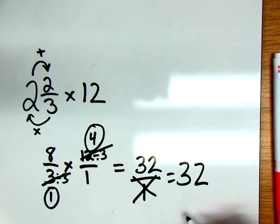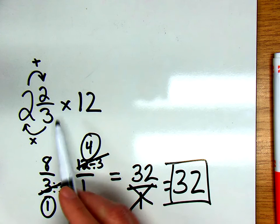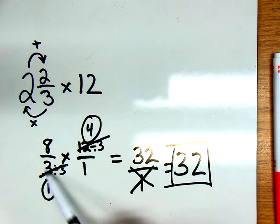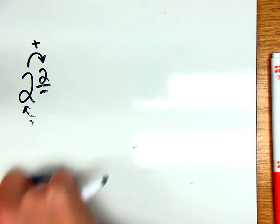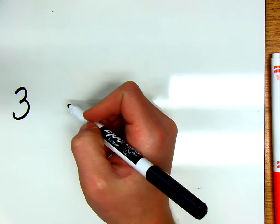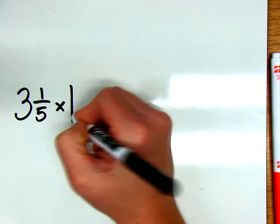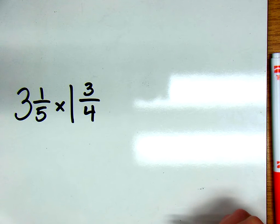So this becomes 8 times 4 is 32 over 1 times 1, but that's improper, so our final answer would just be 32. Ignoring the glare from the ceiling lights. We took the mixed number, we made it improper, and then we use the same rules of multiplying as we do when we work with fractions. For this next problem, I'm going to have you guys pause the video and then see if you can solve it. This is going to be 3 and 1/5 times 1 and 3/4. If you want to pause it here or else you can keep watching.